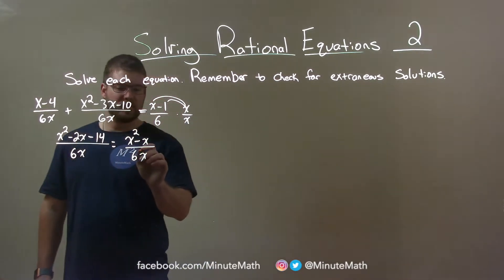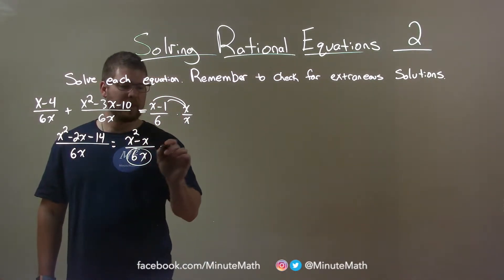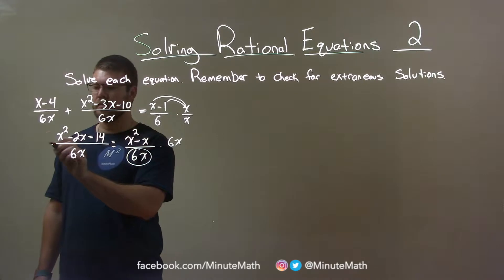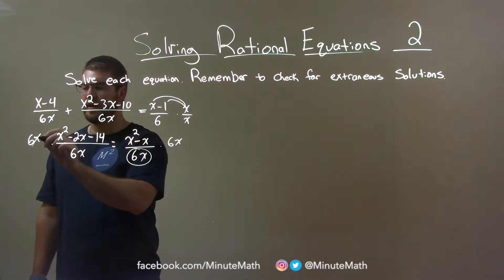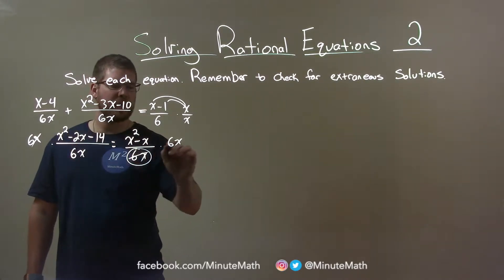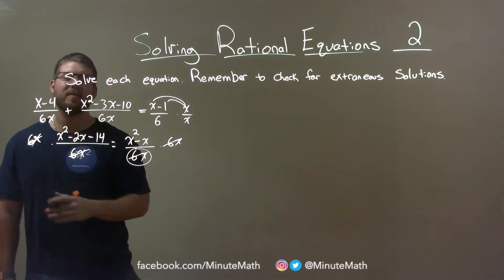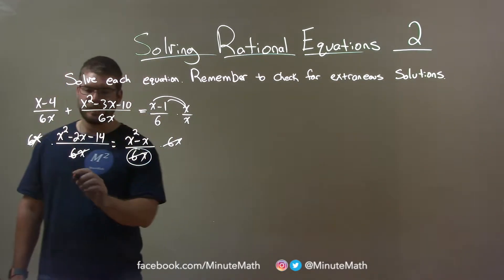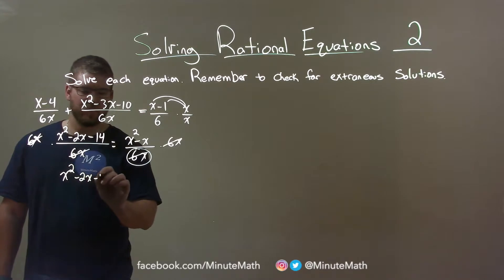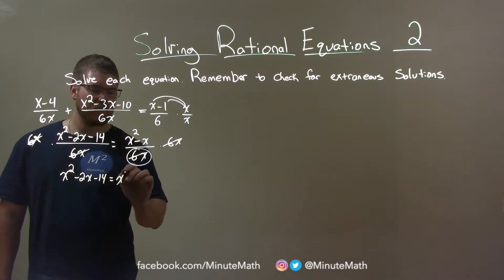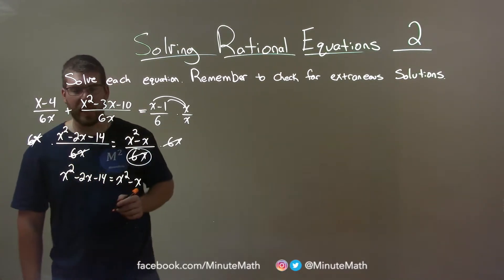Now, if I take this denominator right here and I multiply that to both sides, which I'm allowed to because it's being divided by, these will cancel and so will this. It makes it a much easier problem to solve. x squared now minus 2x minus 14 equals x squared minus x.